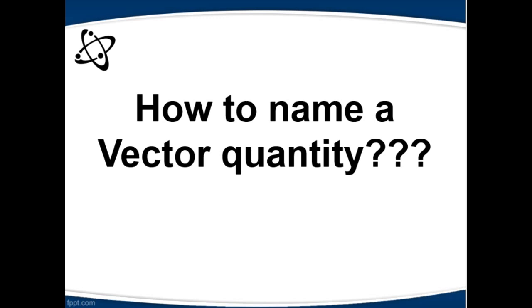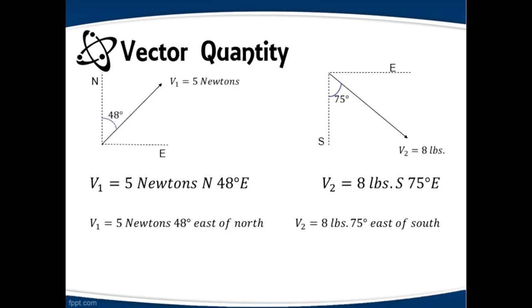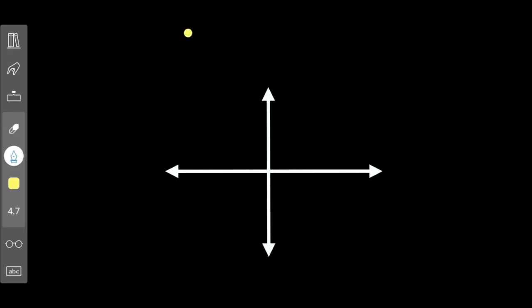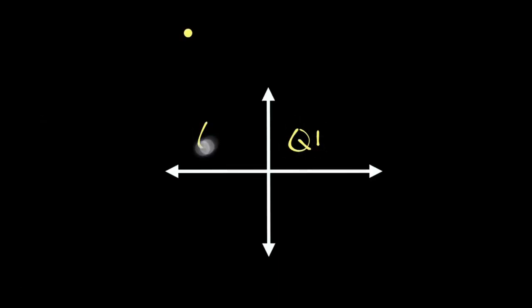How to name a vector quantity? Please refer to the illustration shown on the screen. Two different examples are shown here. The first thing to notice here are the coordinates. In Cartesian plane, as you recall your grade 7 topic, it has 4 quadrants.